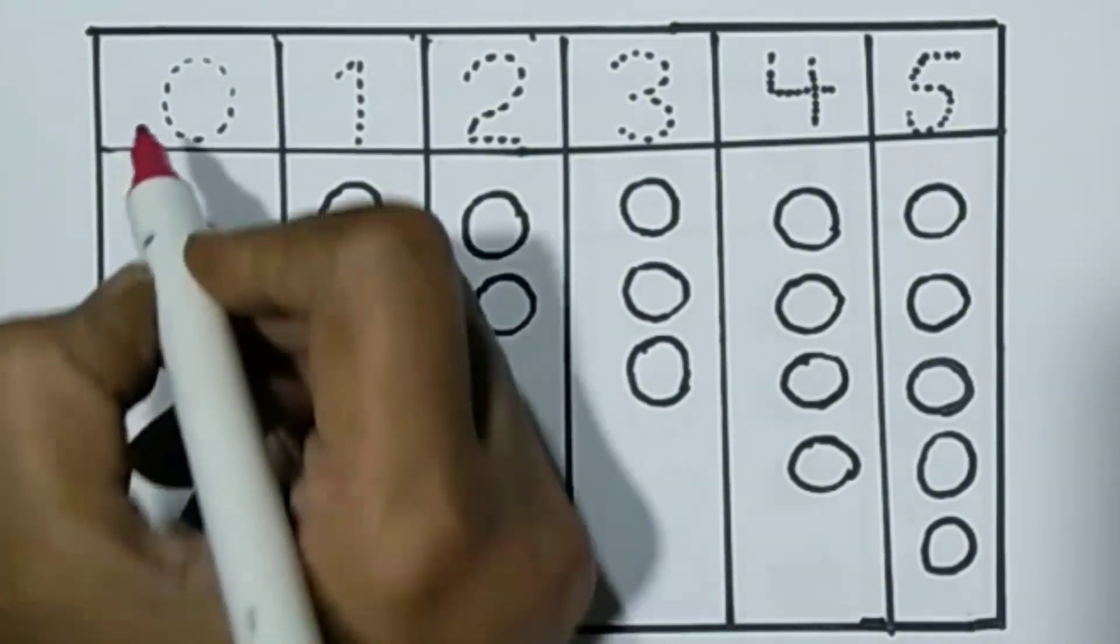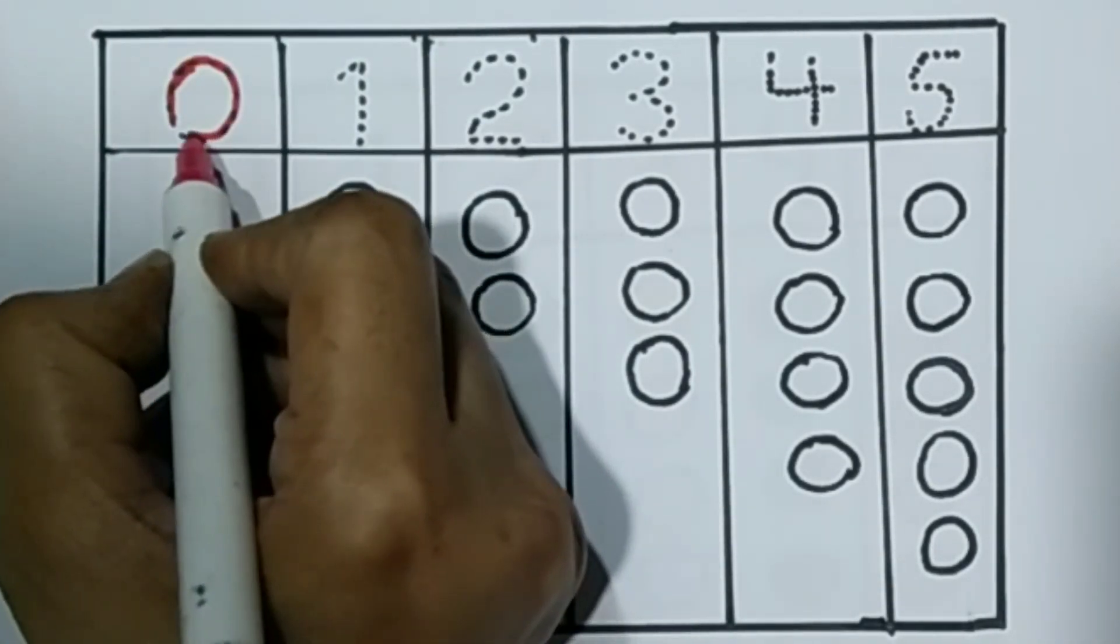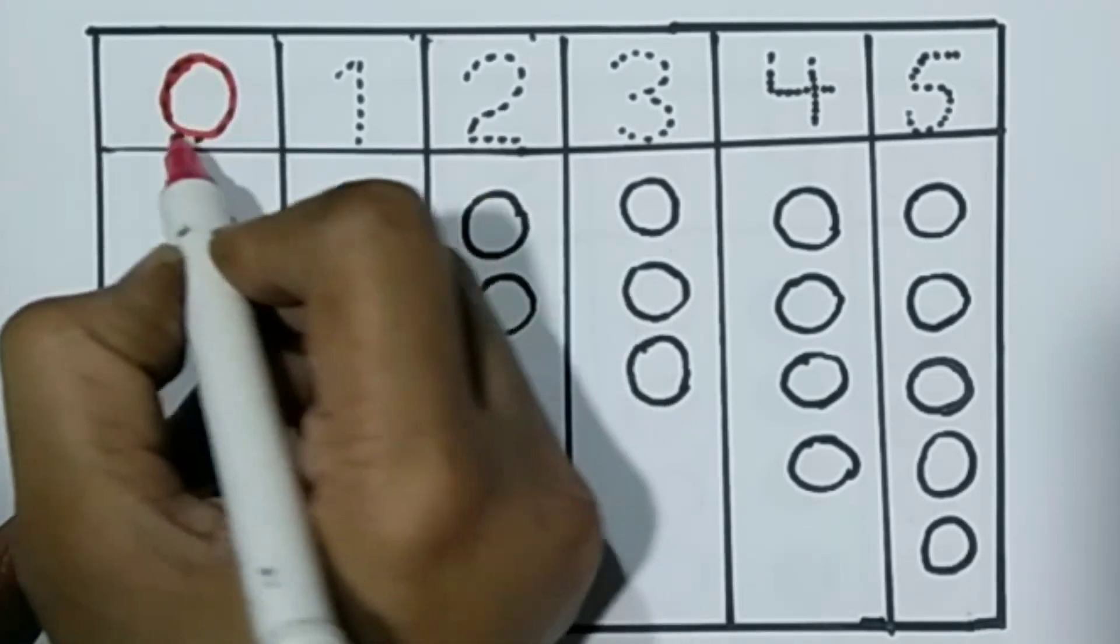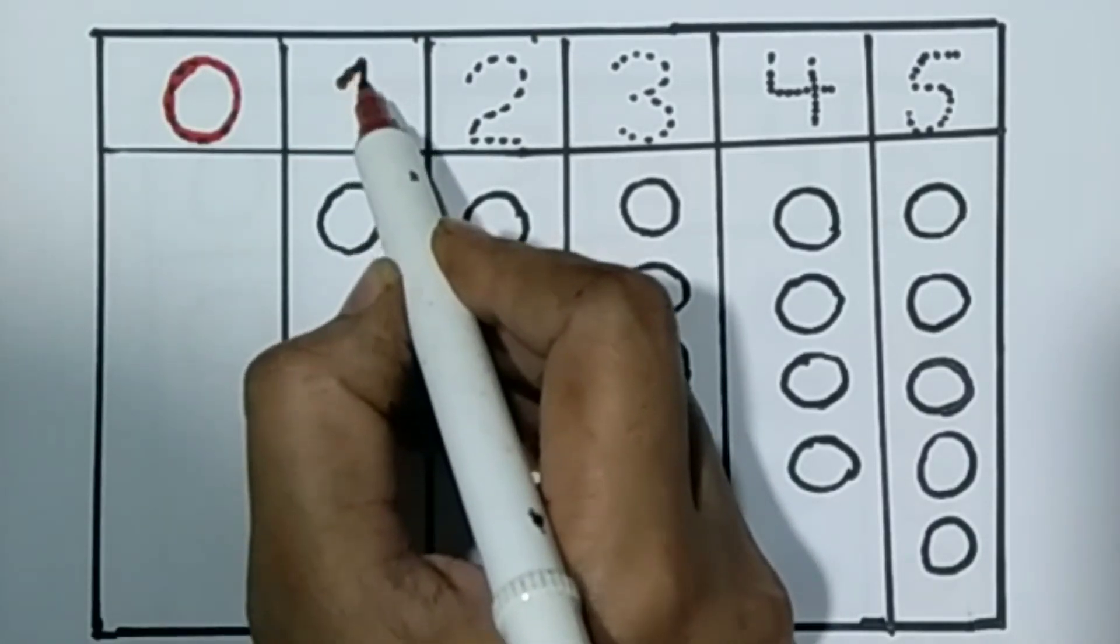Now we learn numbers. First we draw number 0. 0 means no value. After 0, we draw number 1. 0 is red color.